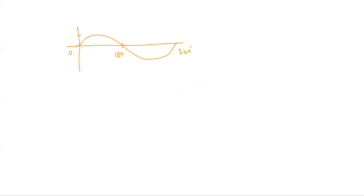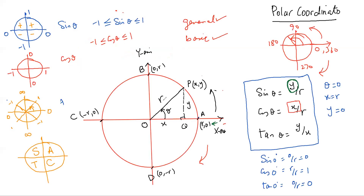Looking at the sine graph: from 0 to 180 it is above the x-axis (positive), and from 180 to 360 the graph is below the x-axis (negative). For cosine, which depends on x: where you have the negative x-axis the cosine values are negative. So cosine is negative from 90 to 270 and positive otherwise.